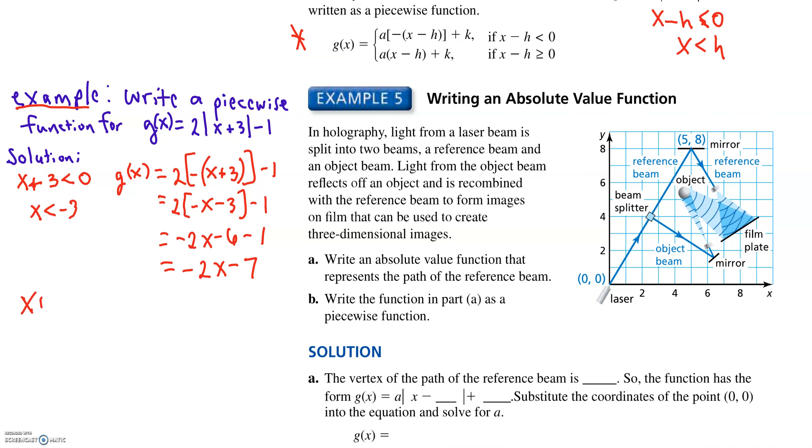So if x plus 3 is greater than or equal to 0, so if what's inside the absolute value is already 0 or more, it's like the absolute value isn't doing anything, or it doesn't have to do anything, right?